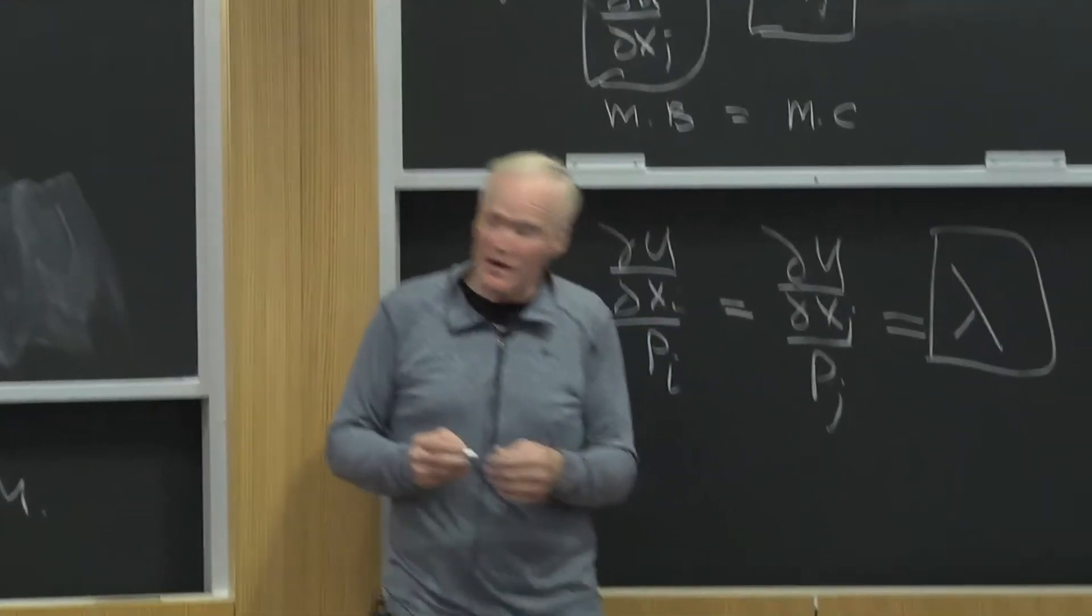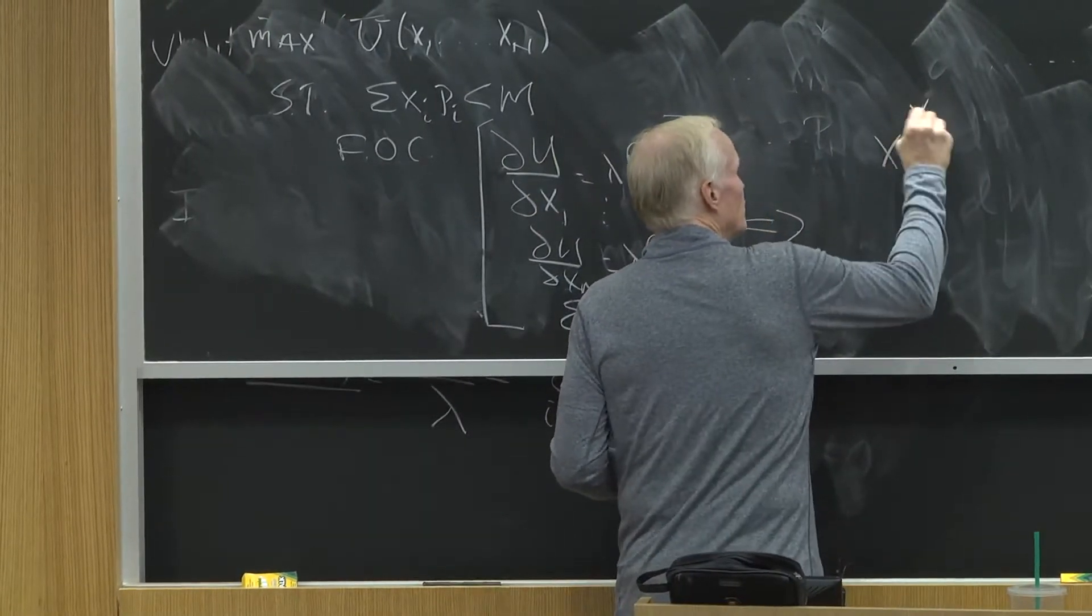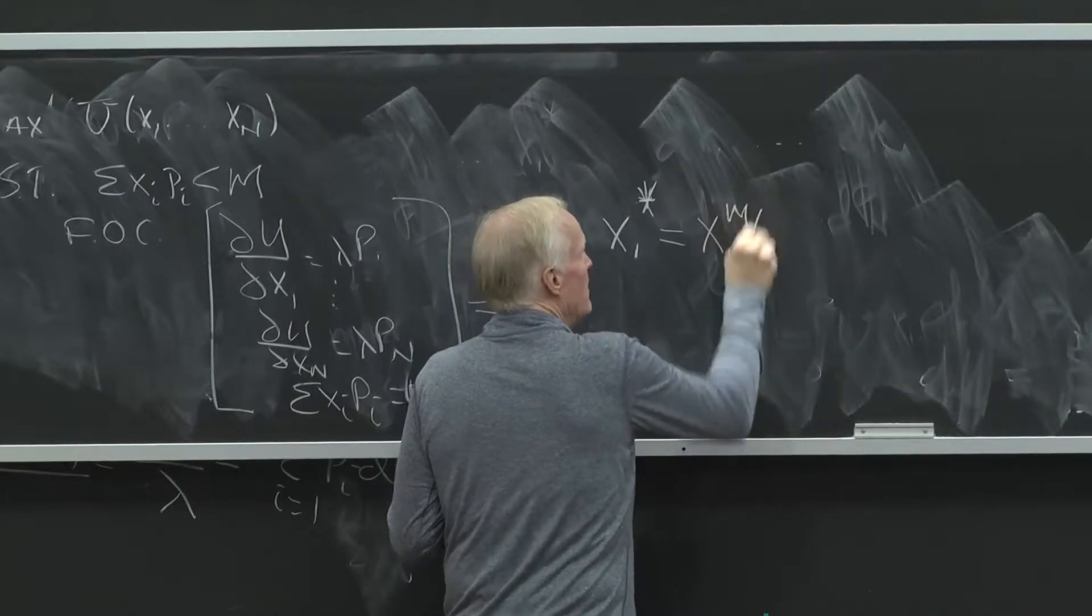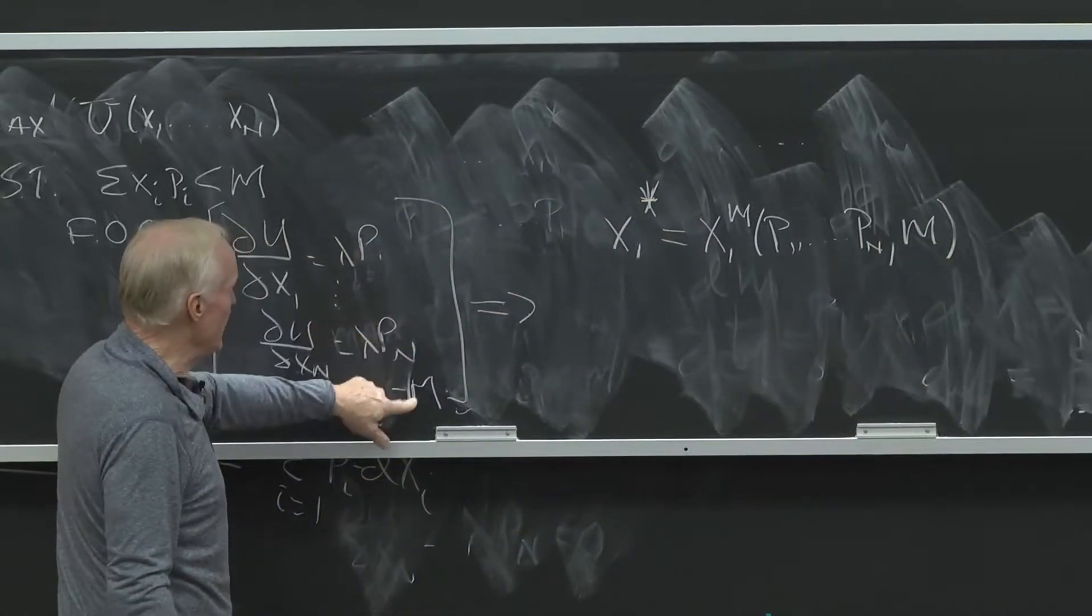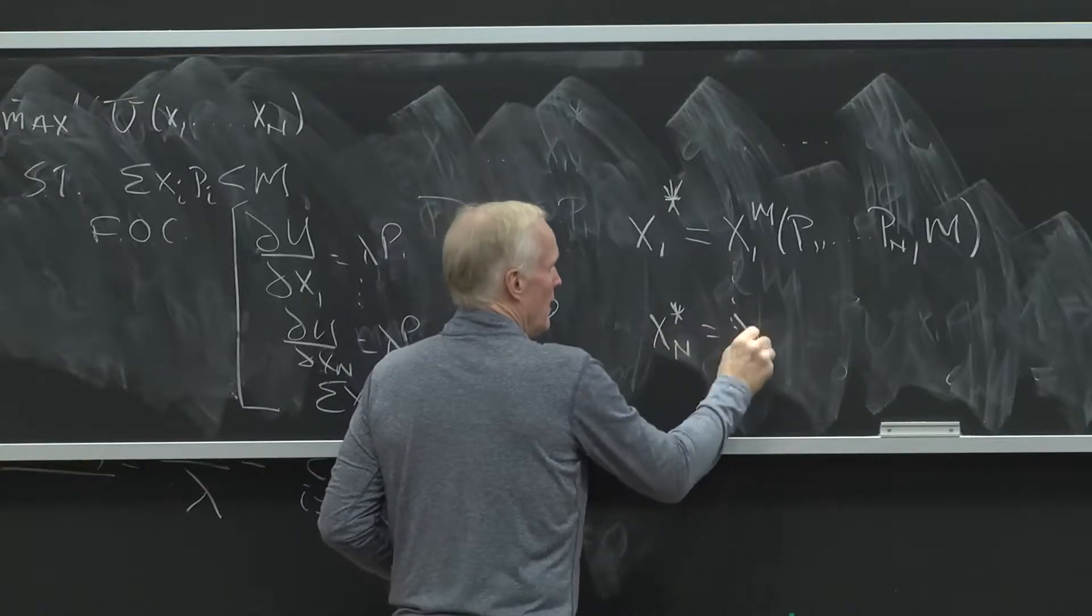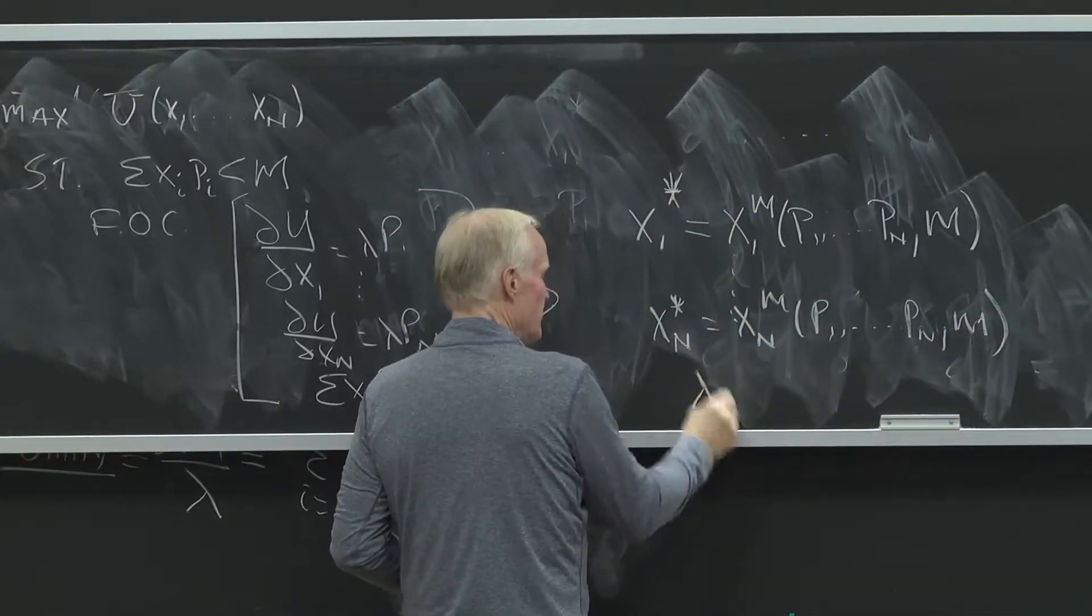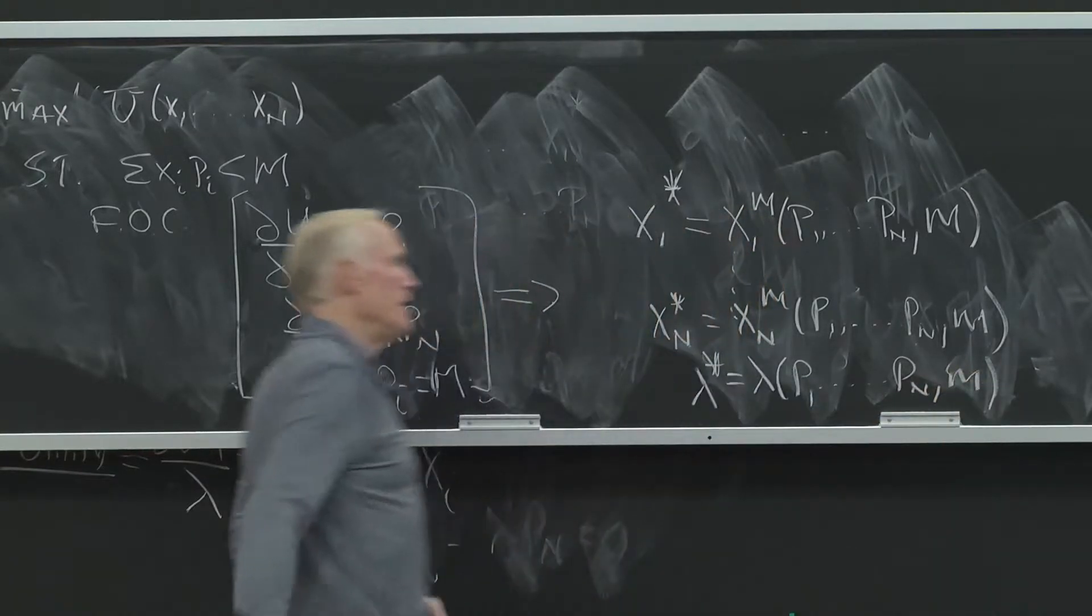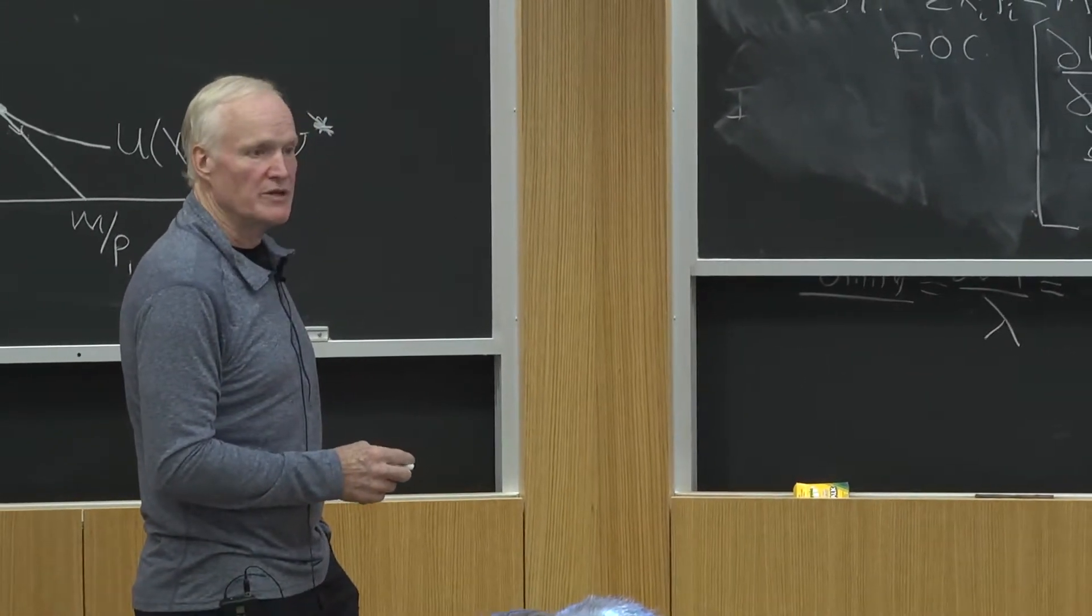Now we have n+1 equations and n+1 unknowns. In general, we'll be able to solve these things. So we can solve these for x1*, the equilibrium amount of x1 I'm going to choose, which is x1m(p1,...,pn,m). That is, if I tell you p1 through pn and m, you can solve this equation with the optimal amounts, and lambda* equals lambda(p1,...,pn,m). Those are the results of solving those first order conditions.